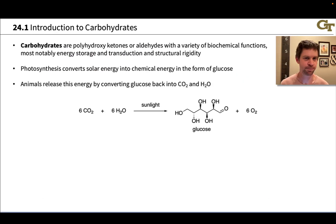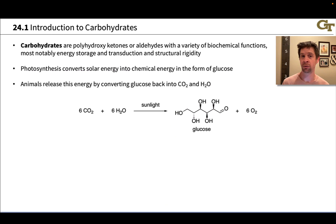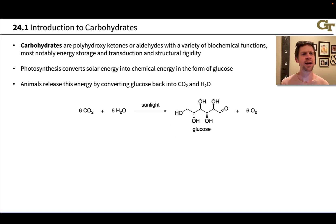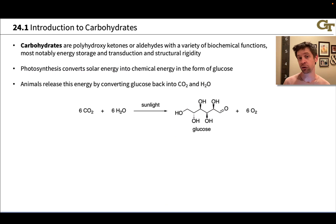What is a carbohydrate? As the name suggests, carbohydrates can be thought of as hydrates of carbon. The formula of a typical monosaccharide like glucose is C₆H₁₂O₆ — it looks like C with H₂O six times, which is why these are called hydrates of carbon, or carbohydrates. More relevant to organic chemistry, they are polyhydroxylated ketones or aldehydes with a variety of biochemical functions: energy storage and transduction, structural rigidity, cell signaling, and much more. Carbohydrates are famously constructed via photosynthesis, converting solar energy into chemical energy in the form of high-energy glucose molecules, while chemotrophs release this energy by converting glucose back into CO₂ and H₂O.